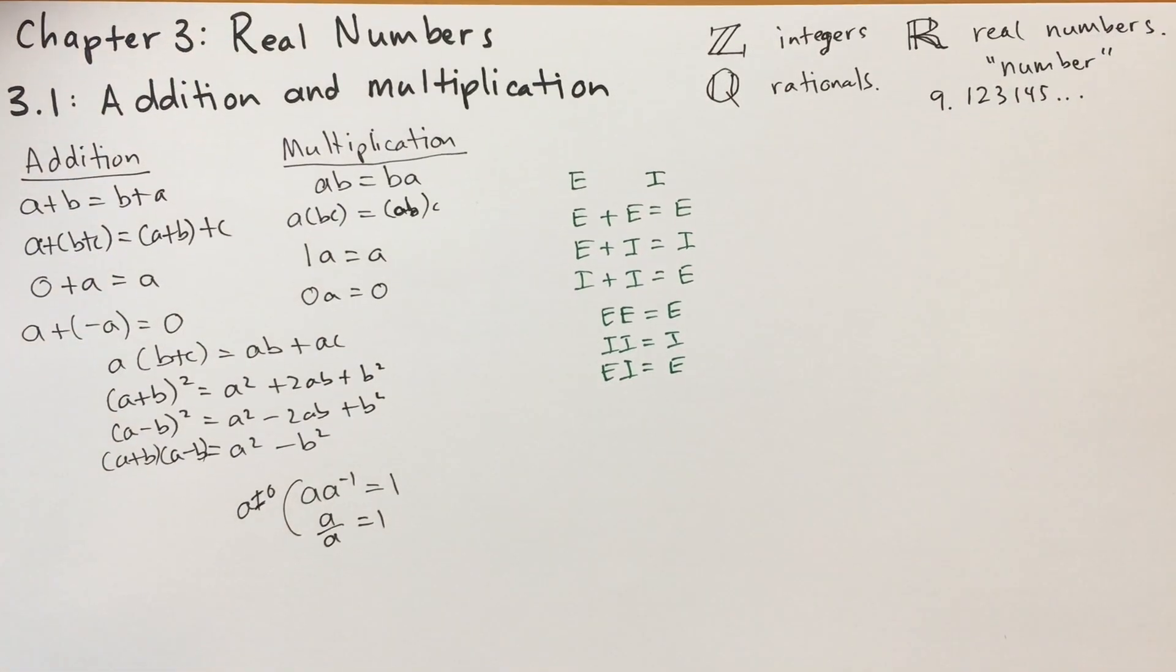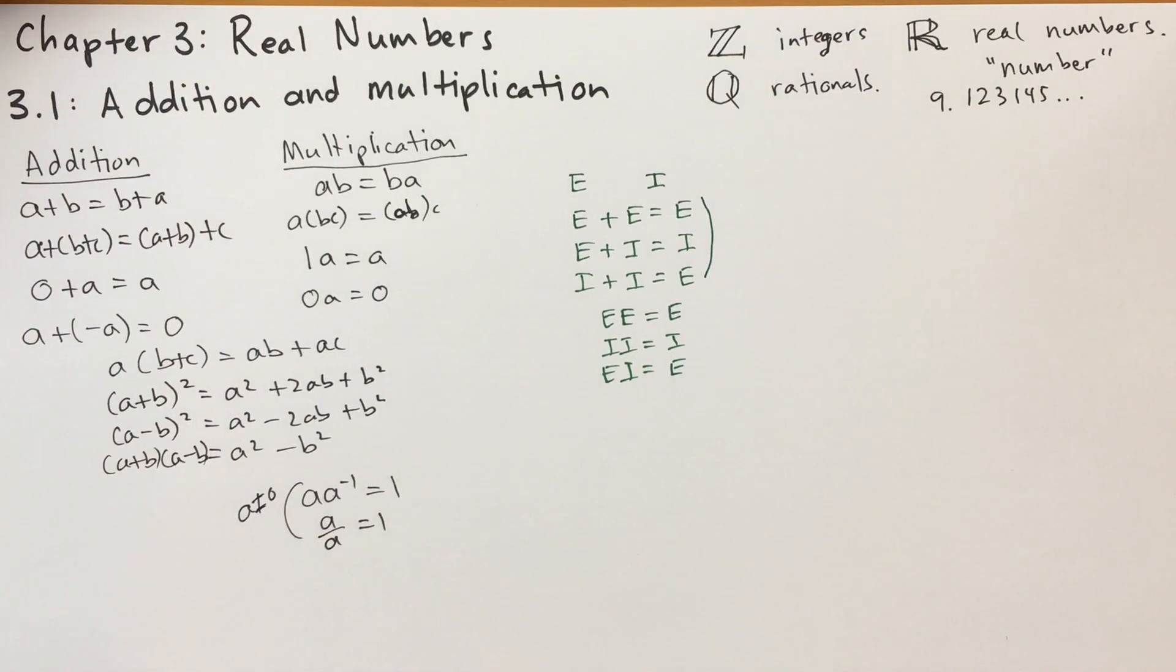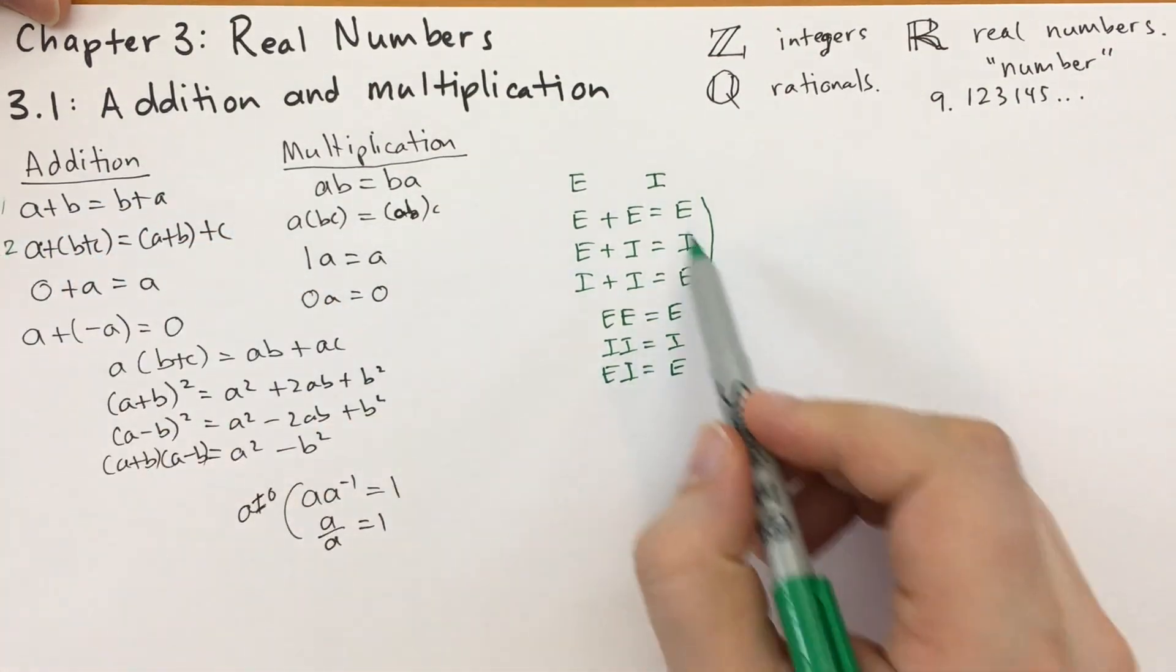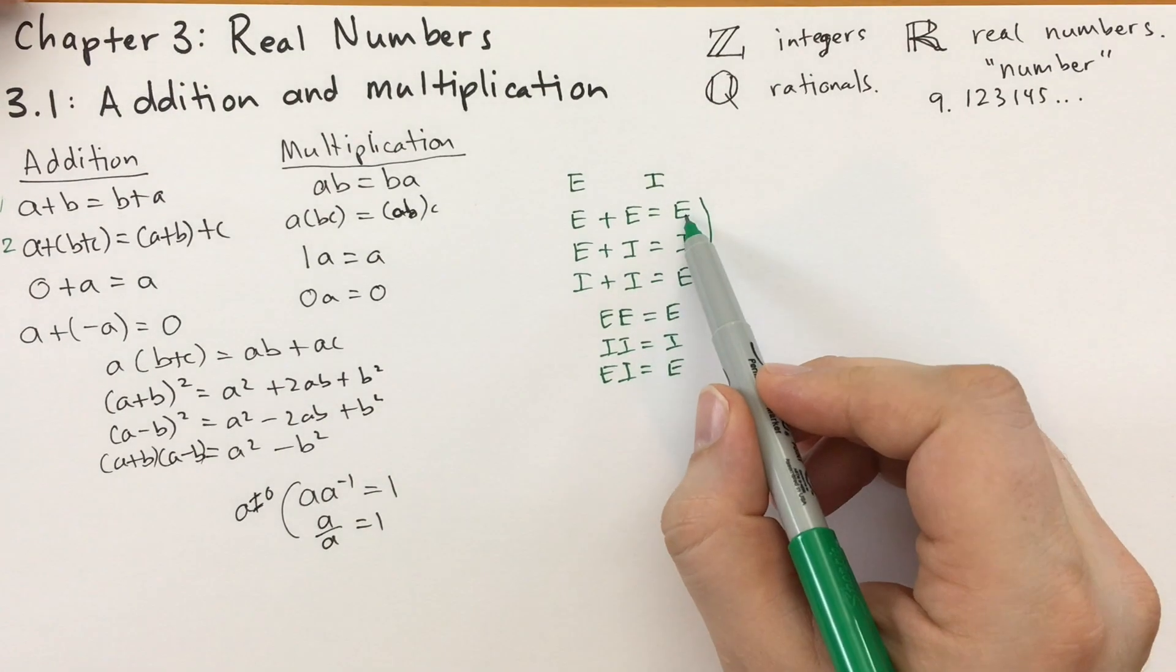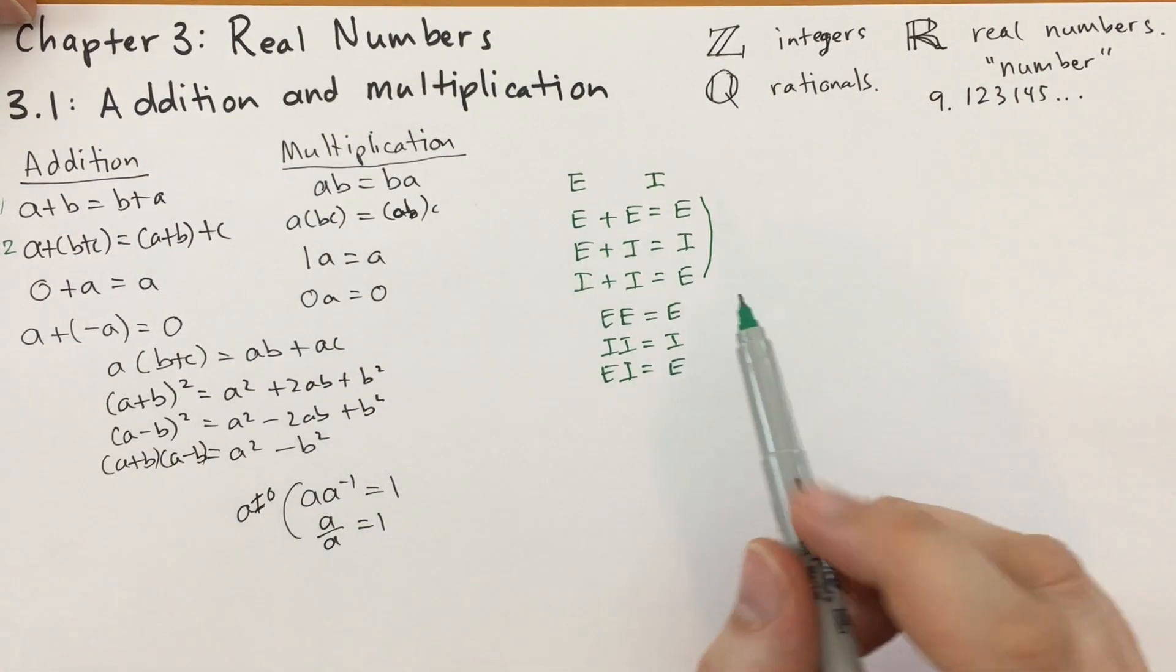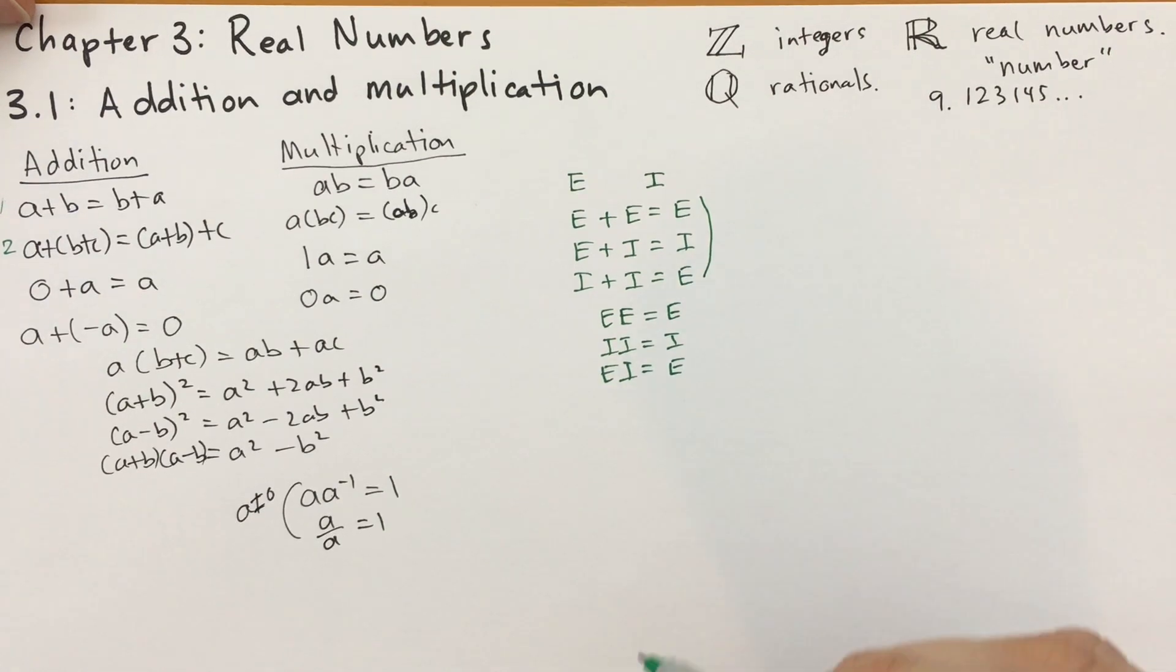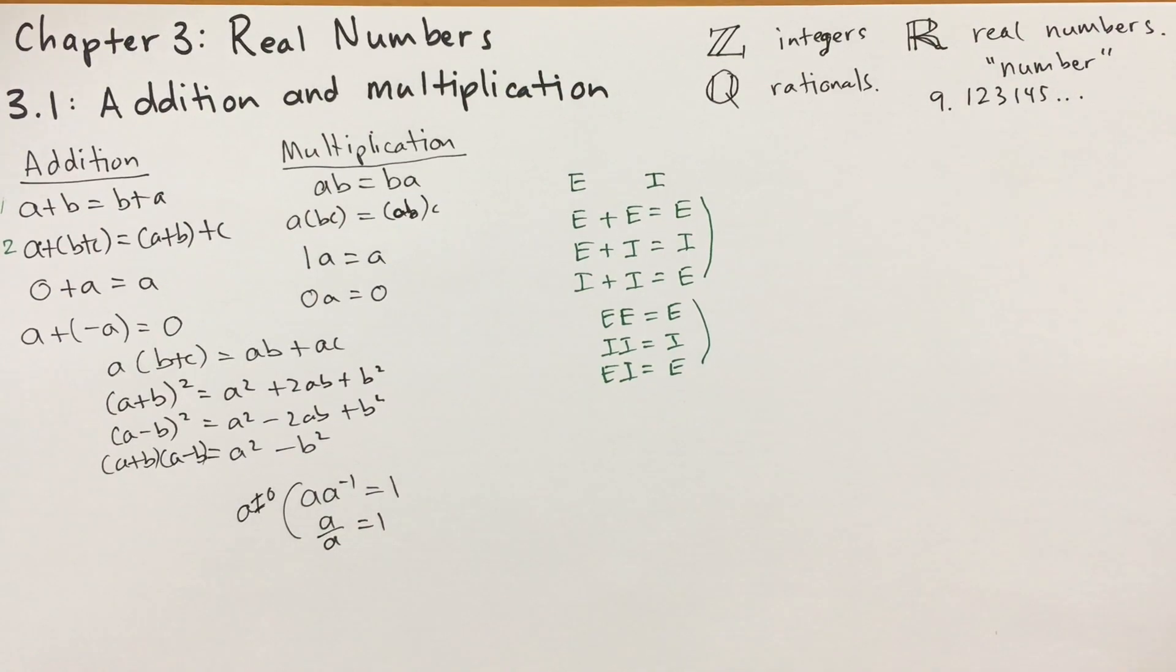Now, part A. So question number one, part A says when you're looking at these additive properties, show that they're associative and commutative. So basically make sure that you can use these two rules for evens and odds. And then the second part is to show that E plays the role of zero, meaning that when you add zero to a number, you get back the original number. You should see that that's kind of true here. E doesn't change the other side. And then you have to show also what the additive inverse is. So what you add to evens to get back an even and what you add to odds to get back an even. If even is zero. And then for B, it's the same thing, but this time you're looking at the multiplication properties. And they also ask about what happens for distribution.